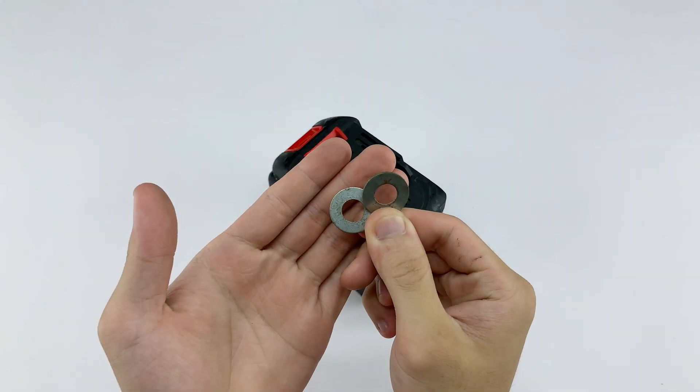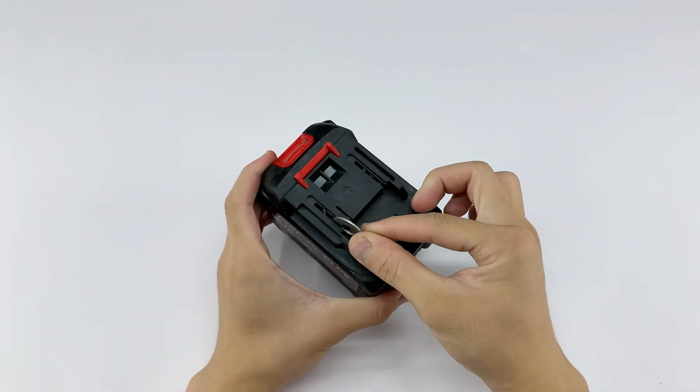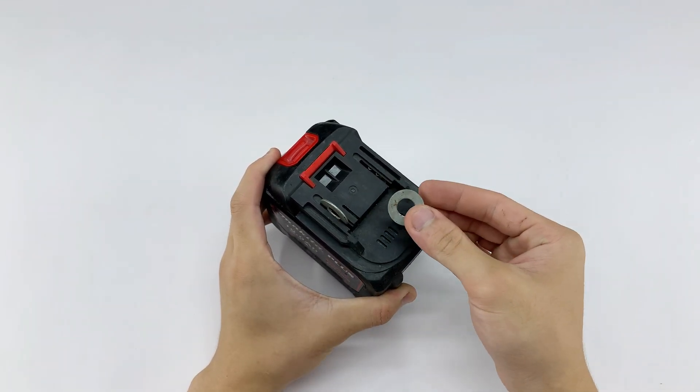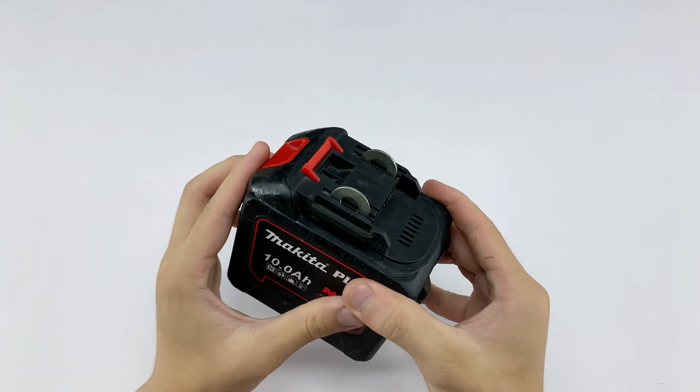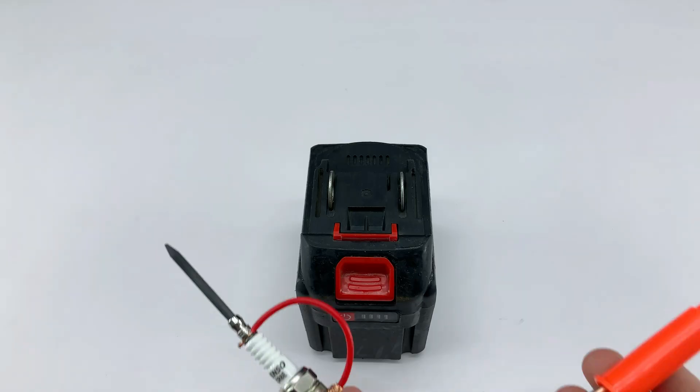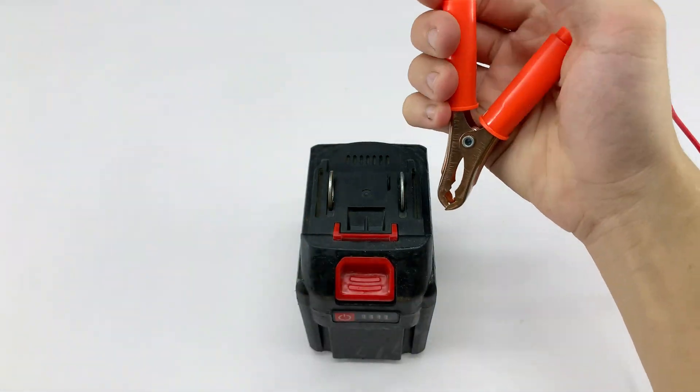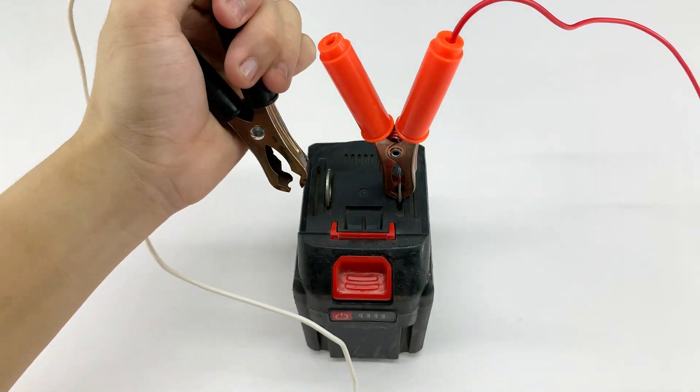These two are metal washers, and we'll use them as intermediaries to connect the power source to our DIY welding device. Be careful not to mix up the wires. Even a small mistake can make the current flow incorrectly or stop the device from working.